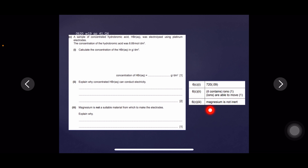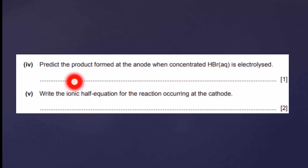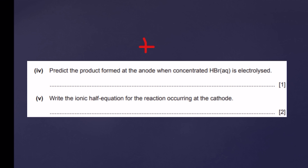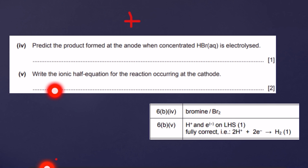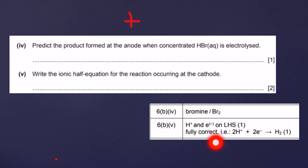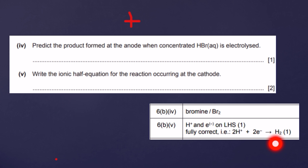Predict the product formed at the anode when concentrated hydrobromic acid is electrolyzed. The anode is the positive electrode, so bromide ions are discharged and the product is bromine — you can also write the molecular formula Br₂. For the ionic half equation at the cathode: hydrogen ions are discharged and reduced, so the fully correct equation is 2H⁺ + 2e⁻ → H₂, giving two marks.